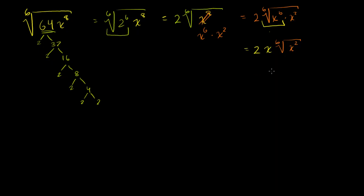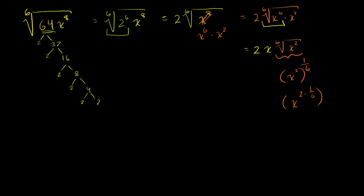We can simplify this even more. The sixth root of x squared is the same as x squared to the one-sixth power. Using exponent properties, when you raise something to an exponent and then raise that to another exponent, that's x to the 2 times one-sixth power, which is x to the 2-sixths. So we have 2x times x to the 2-sixths, and reducing the fraction gives us 2x times x to the one-third.